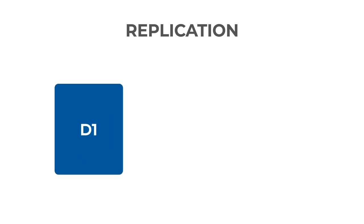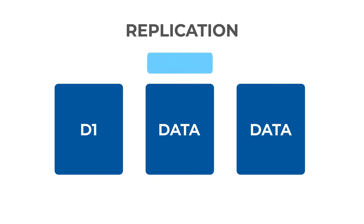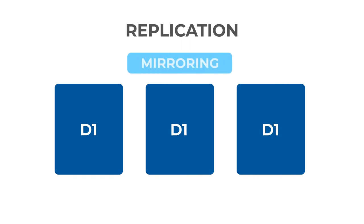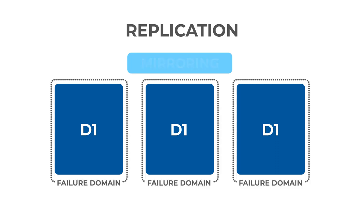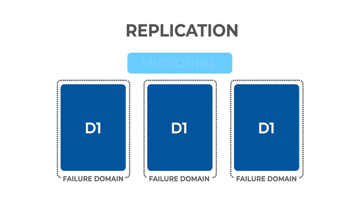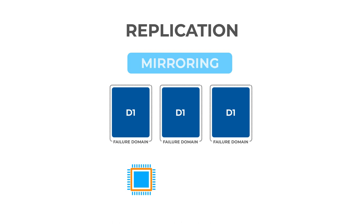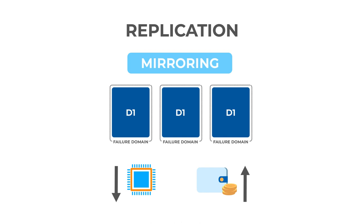Zooming in on the storage target, one of the simplest strategies to protect data and maintain high availability is to replicate identical copies of the data — also commonly known as mirroring. It is important that the redundant copies live in different failure domains so that errors are confined within the domain and do not impact the other domains. This technique requires very little processing or compute capabilities, but clearly this is an expensive solution.